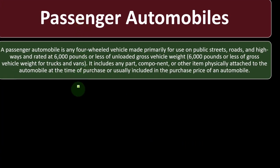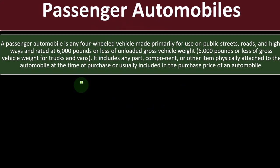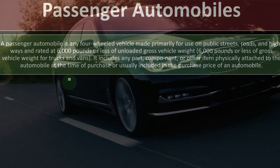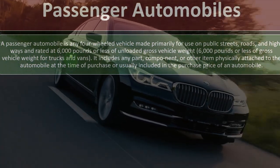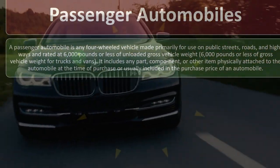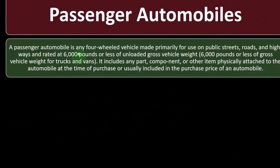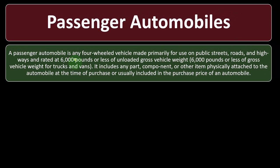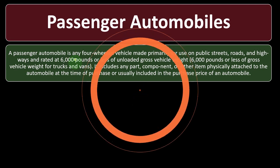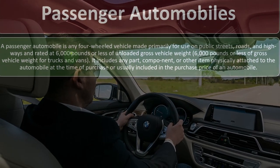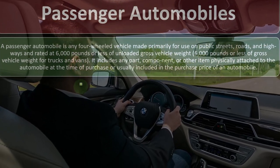Passenger automobiles: a passenger automobile is any four-wheel vehicle made primarily for use on public streets, roads, and highways and rated at 6,000 pounds or less of unloaded gross vehicle weight — 6,000 pounds or less of gross vehicle weight for trucks and vans. This 6,000-pound limit became a messy issue because if a vehicle was over 6,000 pounds it would be treated more like machinery or a work truck, which actually incentivized people to buy heavier automobiles — not at all what the tax code wanted.